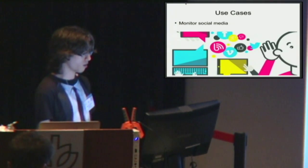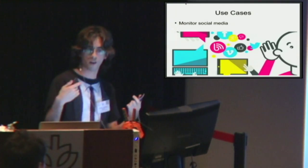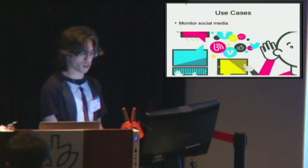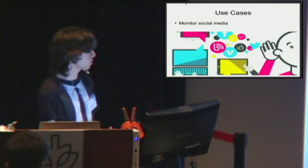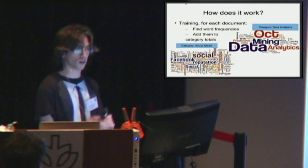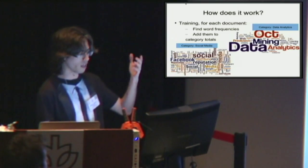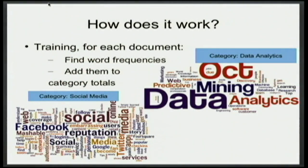Another case is monitoring social media. You want to know what your competitors are up to, what people are saying about your company, or if you're like a stock trader or something, that's something you would want. So how does it actually work? We use document term vectors, which stores how frequent words are used in a document or a category.